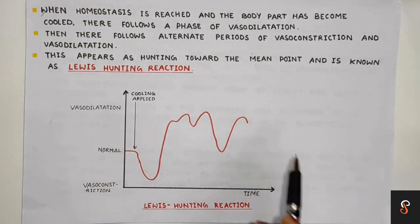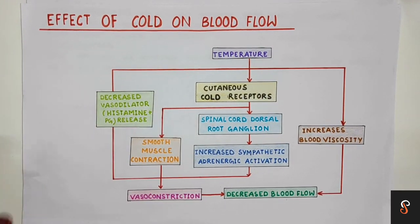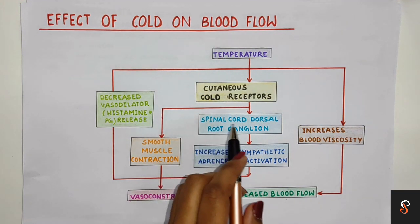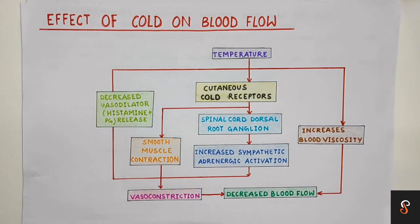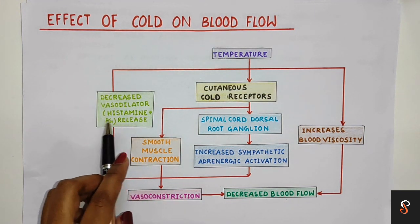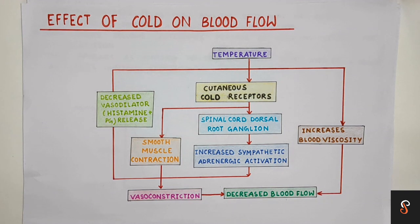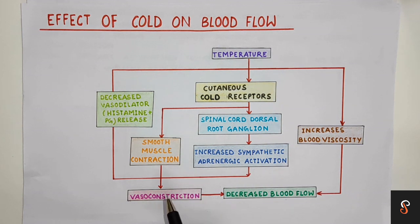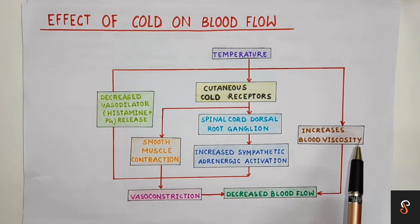Effect of cold on blood flow can be summarized as follows: with the application of cold, body temperature is reduced, which activates cutaneous cold receptors. These cold receptors directly stimulate the smooth muscle of blood vessels to contract, resulting in vasoconstriction and decreased blood flow. The indirect mechanism involves decreased production and release of vasodilator mediators like prostaglandins, resulting in reduced vasodilatation. Reflex activation of sympathetic adrenergic receptors also causes cutaneous vasoconstriction. Additionally, reduced temperature increases blood viscosity, which further results in decreased blood flow.